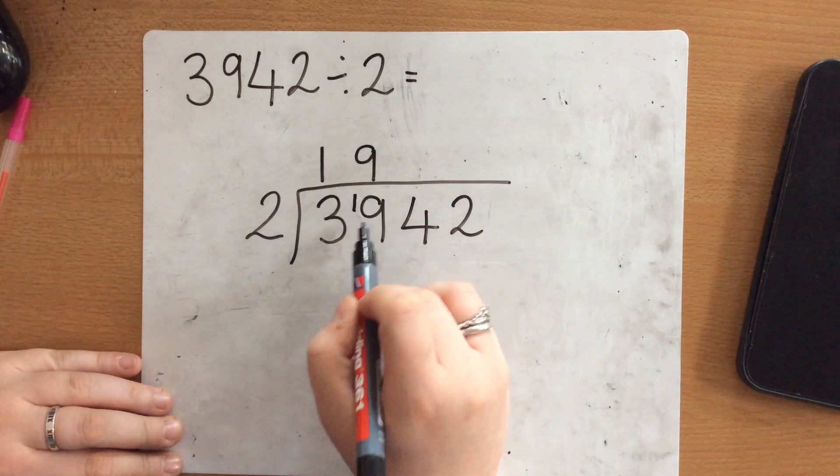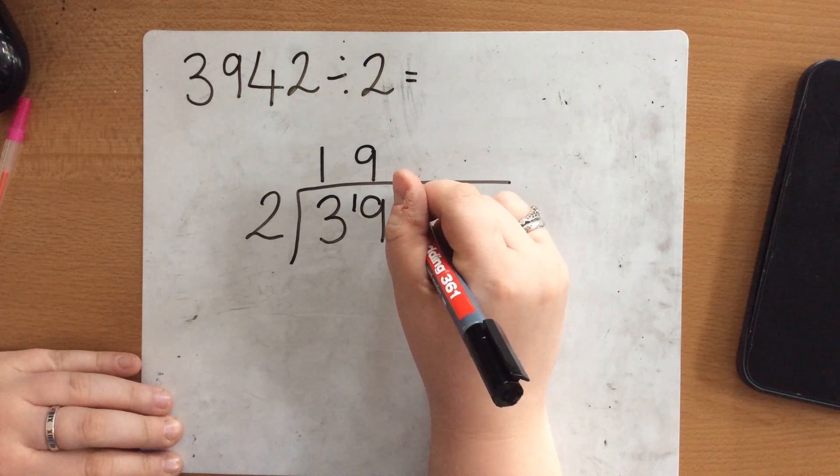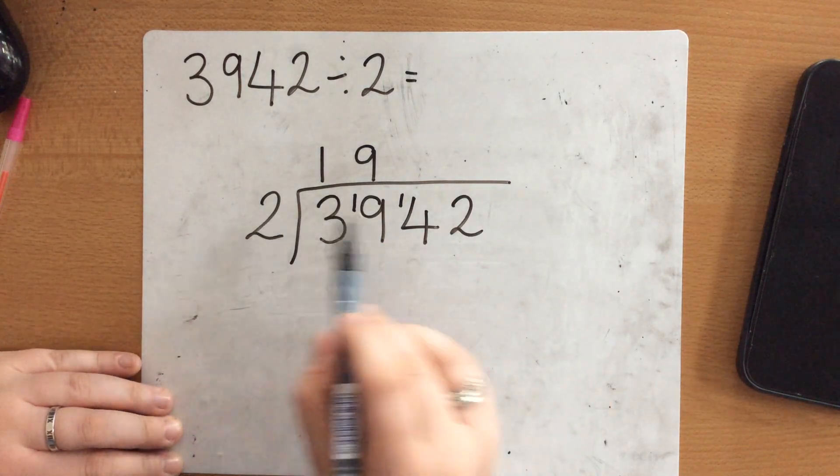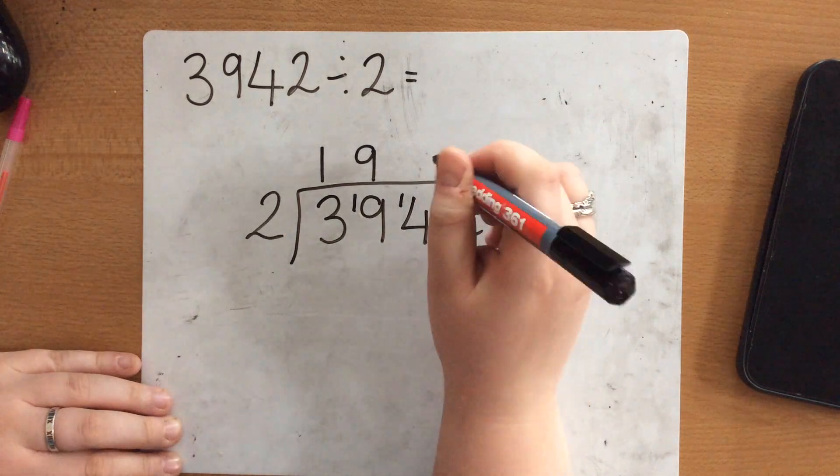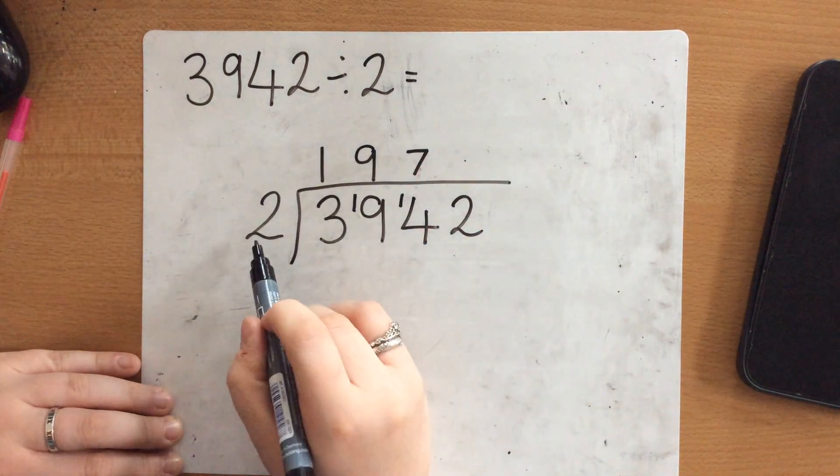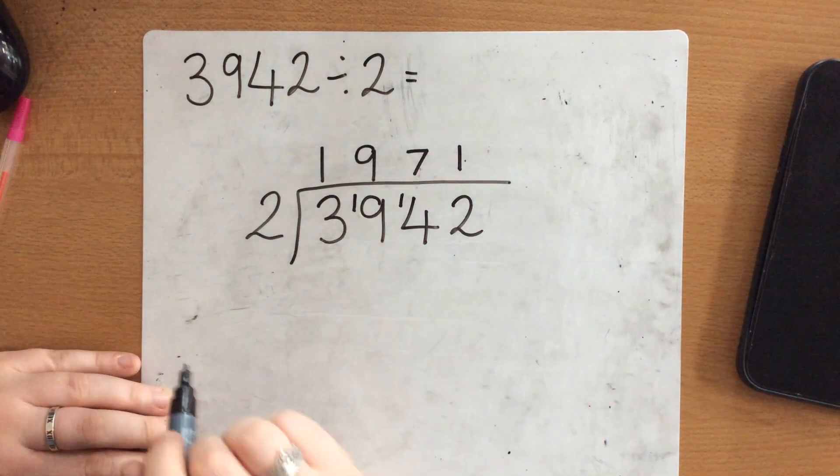So that means again I'm trying to get to 19 so there is another 1 left over. How many 2's go into 14? 7. And how many 2's go into 2? 1.